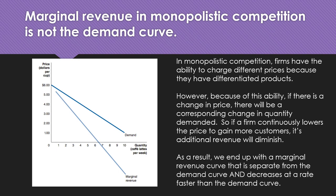In a monopolistically competitive market structure, we have a downward sloping demand curve. Certain people really want this specific version of a good or service, while others will buy it but at different price levels — they get different levels of utility or satisfaction from it. Because of this downward sloping demand curve, a trade-off occurs: when you lower the price, you lower the marginal revenue.